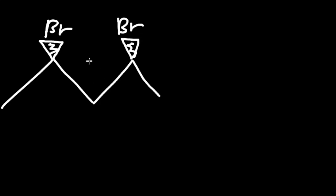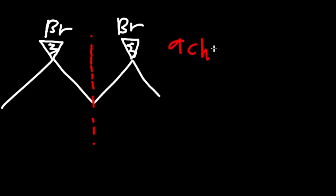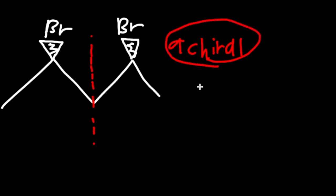The first thing we want to do is look for the internal plane of symmetry. That means draw a line, and if you see that the left side and the right side match each other, that means it can be achiral. In this case we drew a line right down the middle and we see that left and right are equal parts — half. And we also see that they both have a wedge. So this means the whole molecule is achiral.